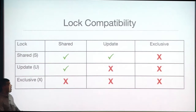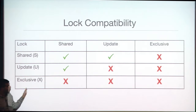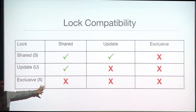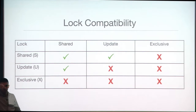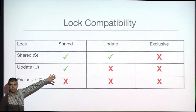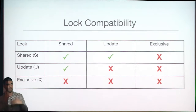This is a shortened version of the compatibility matrix. The key point: the exclusive lock is not friends with anyone — once you place an exclusive lock on something, no one else is allowed. But the update lock allows shared locks on top of it, so it's a really important distinction.